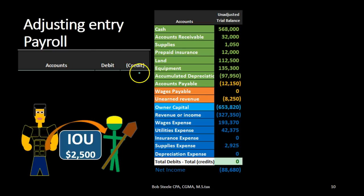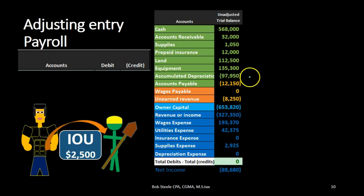If we have the trial balance and we know it's an adjusting entry related to payroll, we know that at least two accounts will be affected. Because it's an adjusting entry, it will be as of the end of the time period — in this case the end of the year, 12/31, when we make the financial statements. There will be one account above the equity section, which is a balance sheet account, and one account below the equity section.